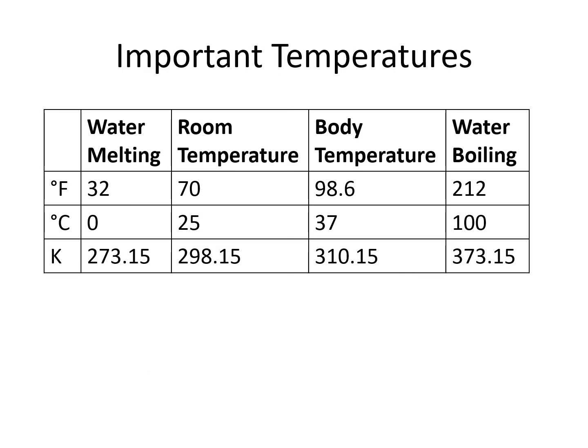To solve some problems, you don't necessarily need to do a temperature conversion calculation, as long as you know some common temperatures on each scale. You should know that the melting temperature of water is 32 degrees Fahrenheit, 0 degrees Celsius, and 273.15 Kelvin. Room temperature is 70 degrees Fahrenheit, 25 degrees Celsius, and 298.15 Kelvin. Body temperature is 98.6 degrees Fahrenheit, 37 degrees Celsius, and 310.15 Kelvin. The boiling point of water is 212 degrees Fahrenheit, 100 degrees Celsius, and 373.15 Kelvin.